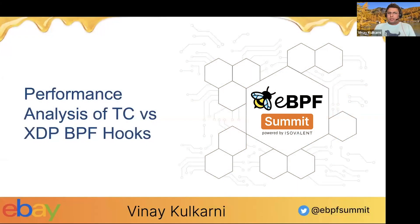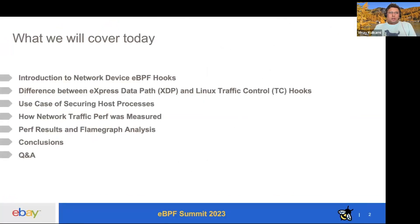Welcome to the session on performance analysis of TC versus XDP eBPF hooks. My name is Vinay. The agenda for today is we will look at the eBPF hooks available at the network device, the difference between XDP (express data path) and Linux traffic control hooks (the TC hooks), our use case of securing host processes, how we set up our performance test framework, how we measured performance and collected the CPU profile, and then open it up for Q&A.